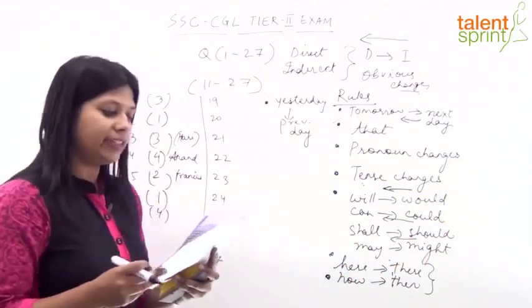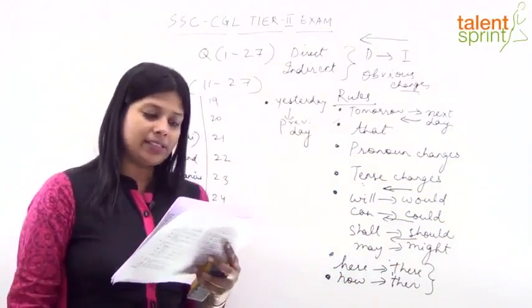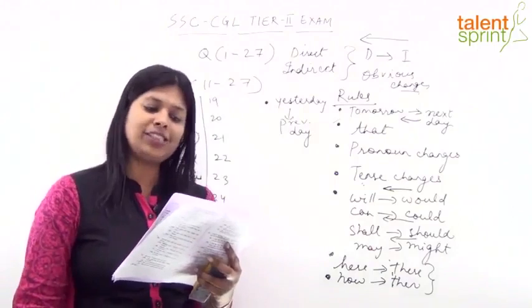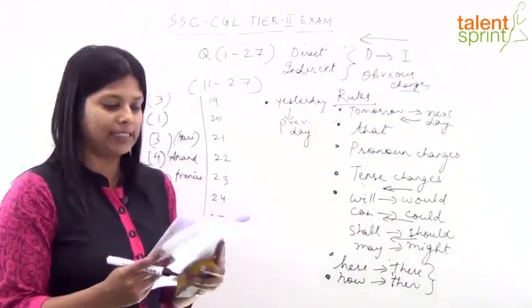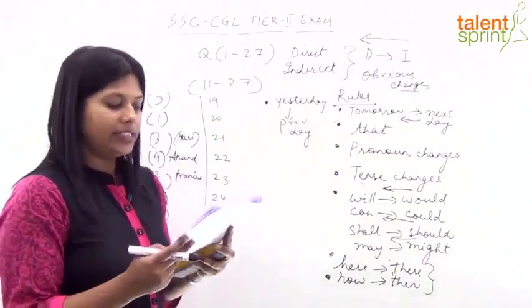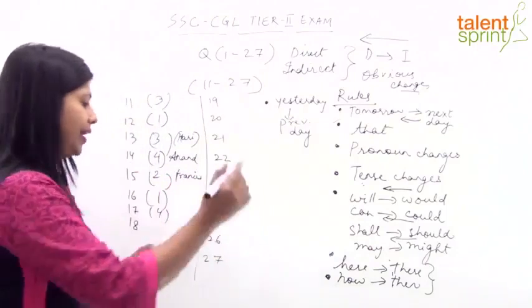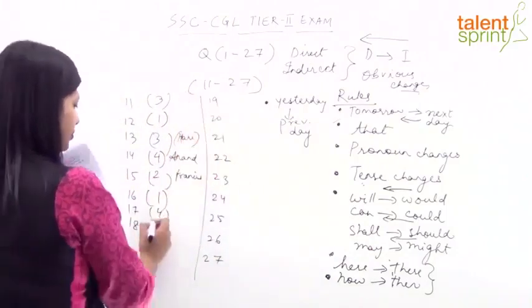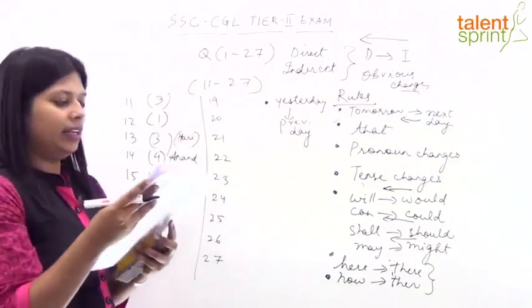Question 18: Mary said that she was sorry. It's simple. Question 18 answer is A. Question 19: He said to me, 'What are you doing?' He asked me what I was doing. Question 19 answer is A.